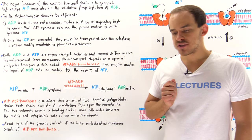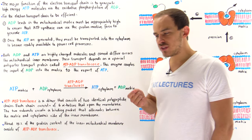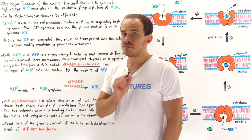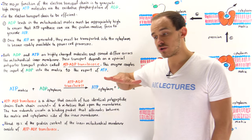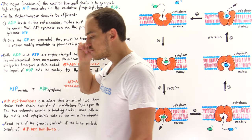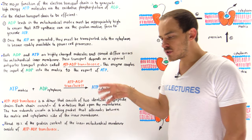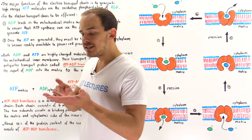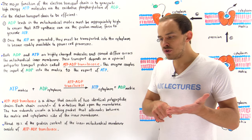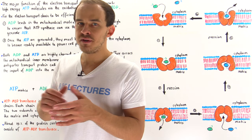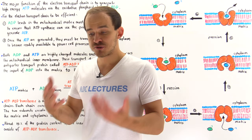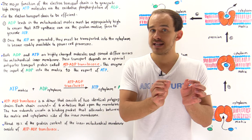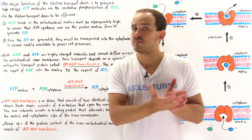The major function of the electron transport chain is to generate high-energy ATP molecules via oxidative phosphorylation of ADP molecules. This takes place on the electron transport chain of the inner mitochondrial membrane. For the electron transport chain to take place effectively and efficiently inside the matrix of the mitochondria, we must have a high enough level of ADP molecules, because ATP synthase of the electron transport chain actually generates those ATP molecules by using the ADP molecules.